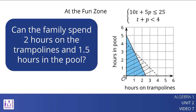Can the family spend 2 hours on the trampolines and 1.5 hours in the pool? No. These two times do add up to less than 4 hours, but to find the cost, we calculate 10 times 2 plus 5 times 1.5, which is 27.5 and is more than the budget. It may be easier to see that the point 2 comma 1.5 is in the region with line shading but not in the region with solid shading, meaning it meets one constraint but not the other.